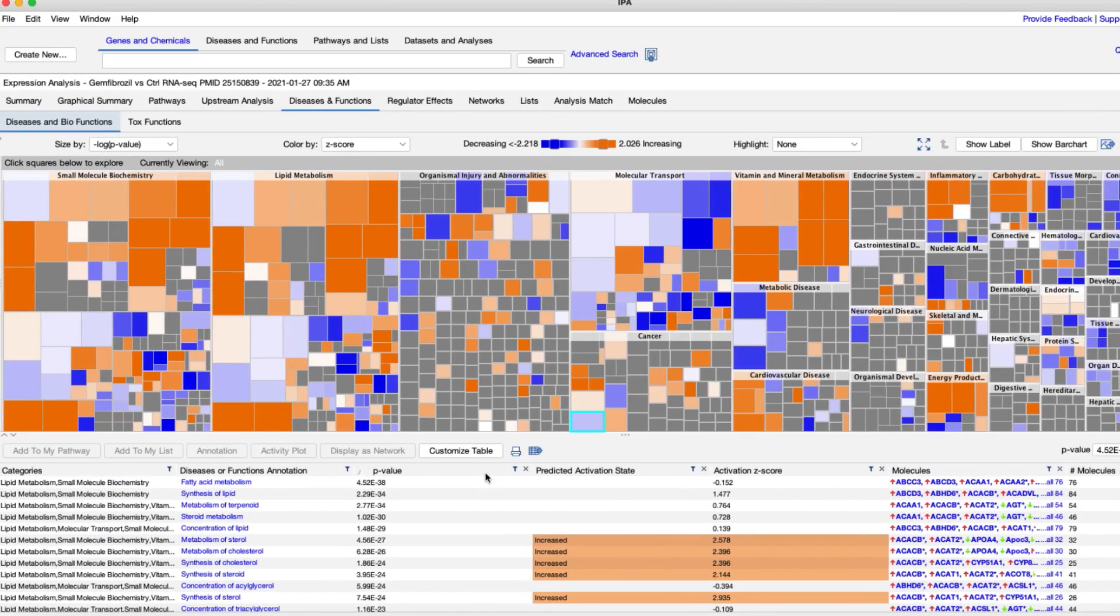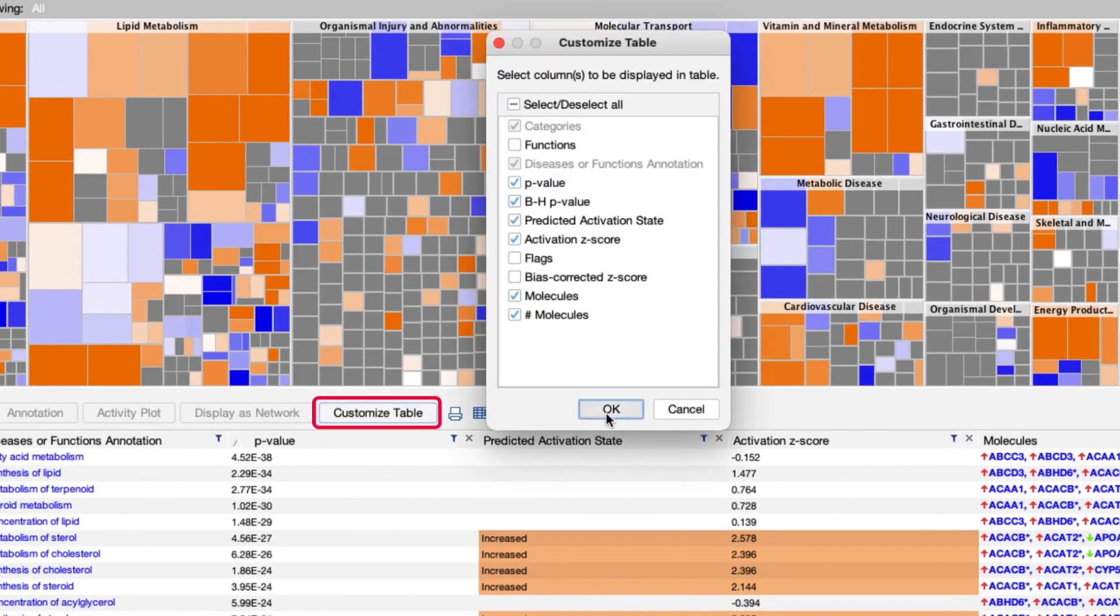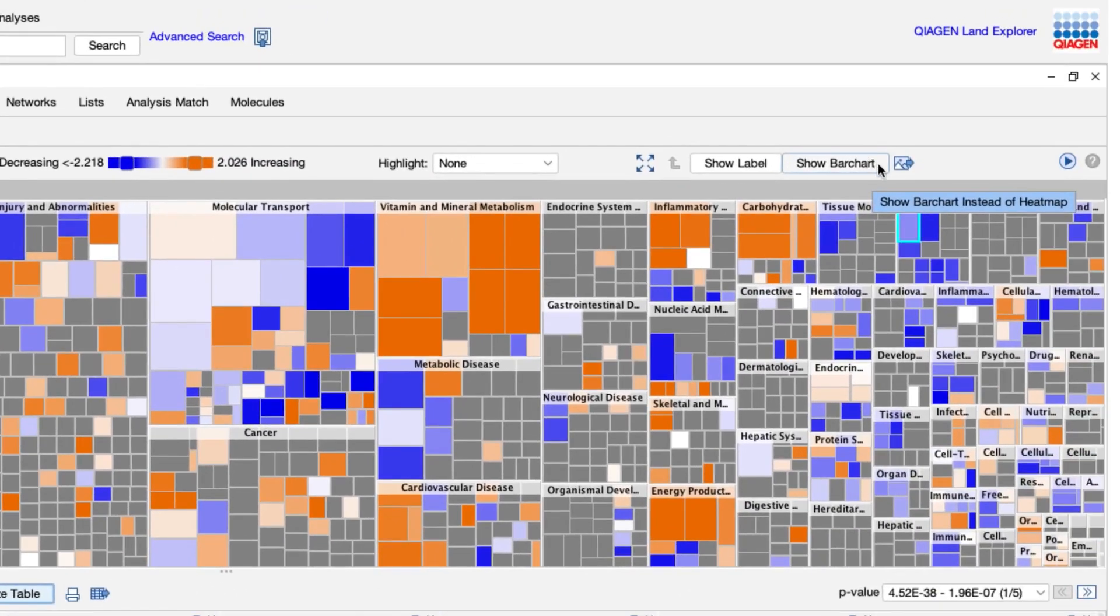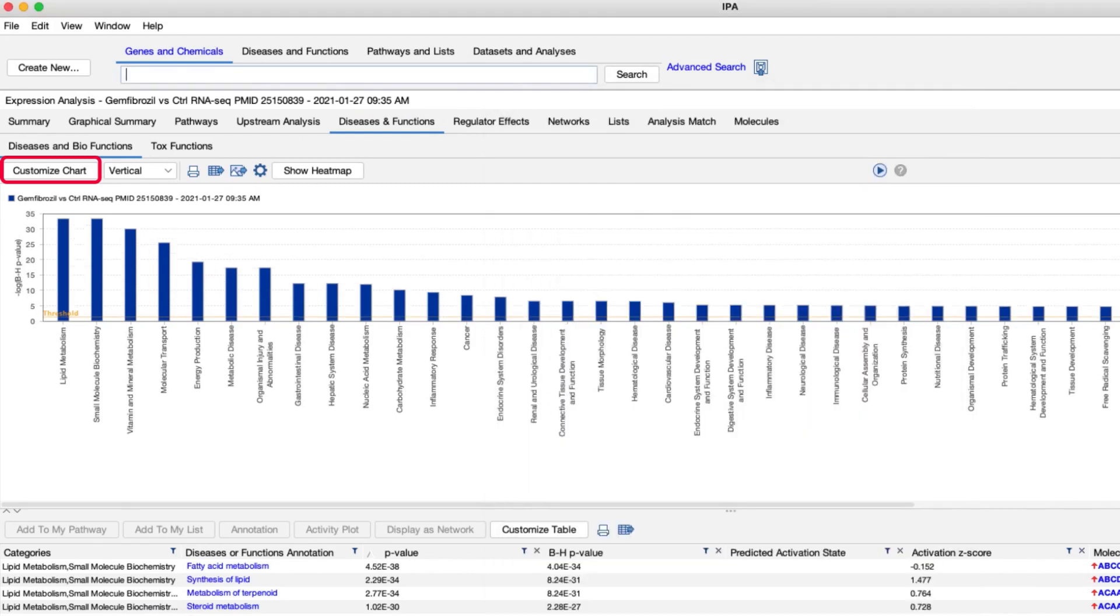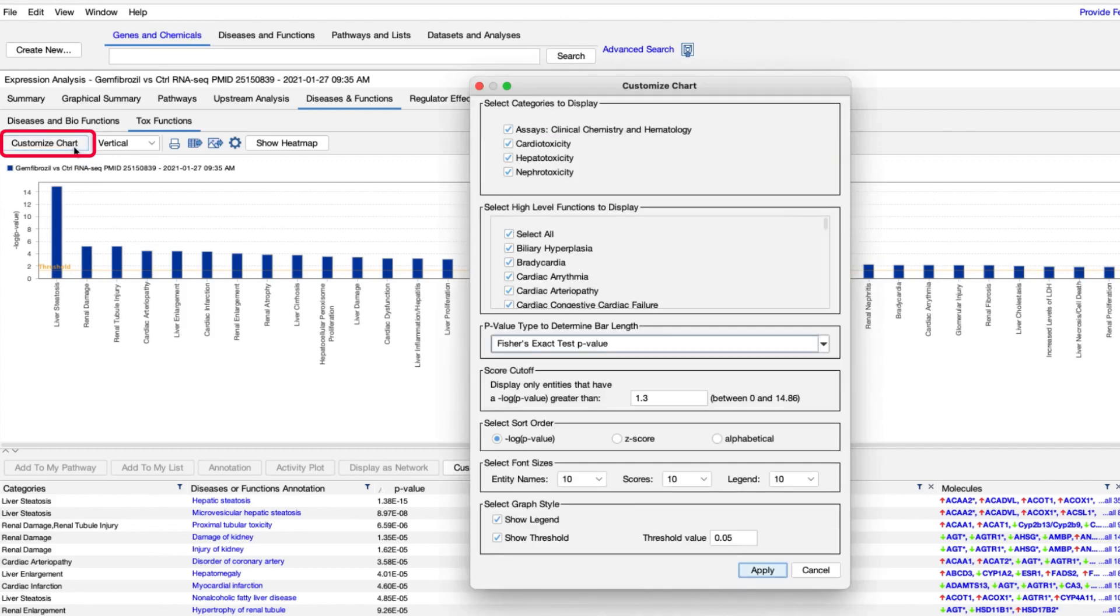And finally, you can view the BH adjusted p-values in the Diseases and Functions results in several ways. First, you can add the BH adjusted p-values within the table below by selecting the Customize Table button. You can also show the adjusted p-values by first going to the Show Bar Chart button and select the Customize Chart button to change the scoring method. You can also use these same options for the Tox Functions results.